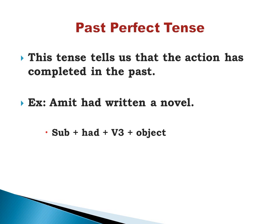Past perfect tense tells us that the action has been completed in the past — it's over. Example: Amit had written a novel. Formula: subject + had + V3 (past participle form of the verb) + object. Perfect tense always uses the past participle form of the verb.